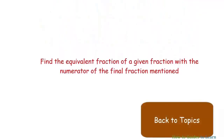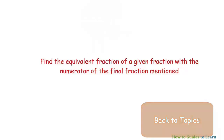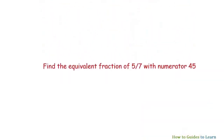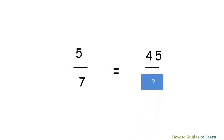Find the equivalent fraction of a given fraction with the numerator of the final fraction mentioned. Find the equivalent fraction of five by seven with a numerator of 45. To find the answer, let's write the question in a mathematical form. Simplifying the question is very important in mathematics. How many times does five give 45? The answer is nine. So multiply the denominator also by nine to get the answer.